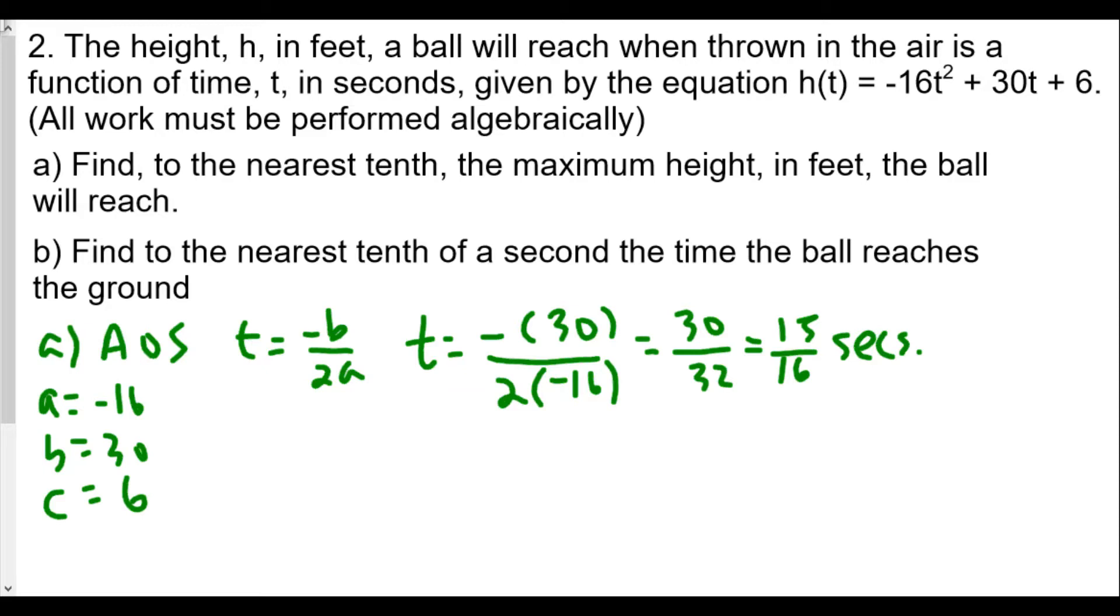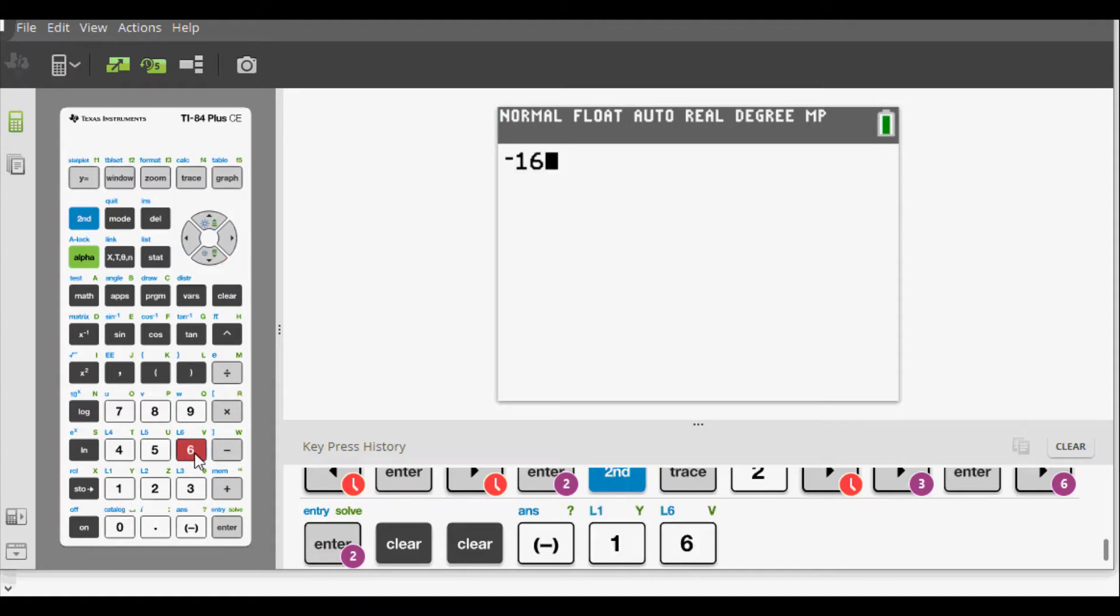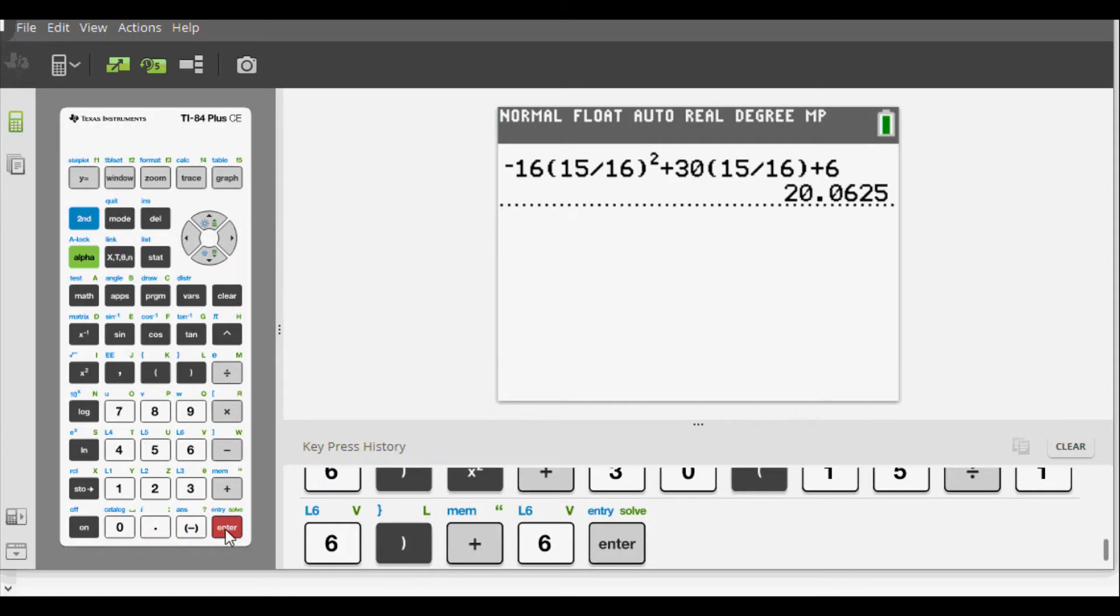That happens at 15/16 seconds, but we're looking for the maximum height. The maximum height can be found when we plug this time into our formula, so h(15/16) = -16(15/16)² + 30(15/16) + 6. Now we're going to type this into a calculator. We do -16 times 15 divided by 16, close parenthesis, squared, plus 30 times 15 divided by 16, plus 6.